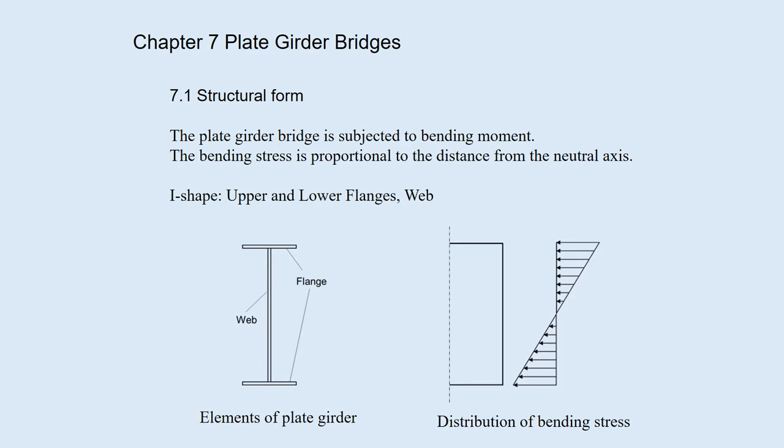The girder bridge made of steel plates is called the plate girder, which is subjected to bending moments. The bending stress is proportional to the distance from the neutral axis. Therefore, it is rational and economical to use the larger amount of materials at the upper and lower edges. This leads to the I-shape, which consists of the upper and lower horizontal plates and the vertical plate. The horizontal plate is called the flange and the vertical plate is the web.